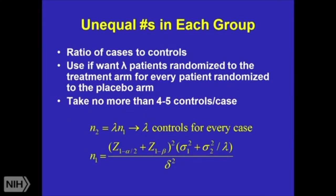So what are some changes? If you have unequal numbers in each group, the ratio of cases to controls, you want to use this if you have a certain lambda set of patients randomized to the treatment arm for every patient randomized to the placebo arm. You can also use this in a case-control setting. The idea here is that you're going to have different variances. You're going to use this ratio, calculate the sample size for one group, and then use that to calculate sample size for the other group.